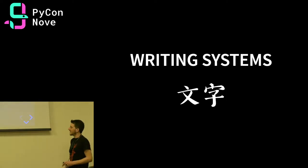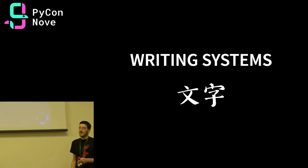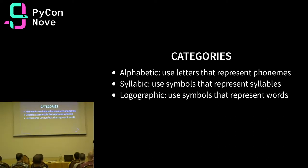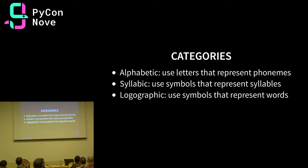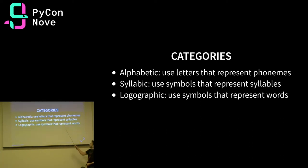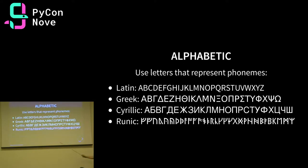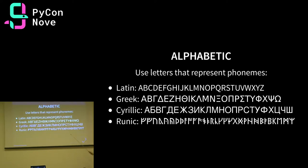Before focusing on Chinese in particular, let's look at several writing systems that exist. The three main categories are alphabetic writing systems — the ones you are probably most familiar with. Most European languages like English, Italian, and German use letters to represent phonemes, as do Russian and Greek using Cyrillic or Greek script. Then we have syllabic languages that use symbols representing syllables. And finally logographic, which uses symbols to represent whole words.